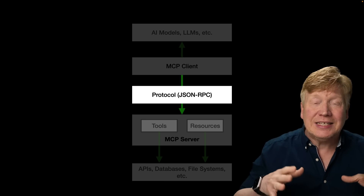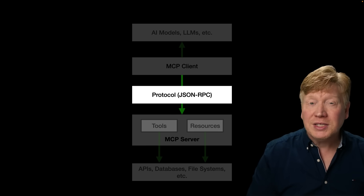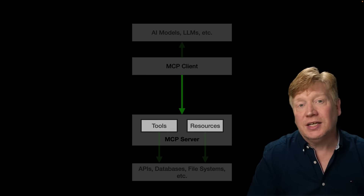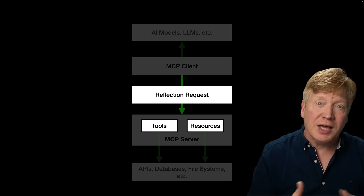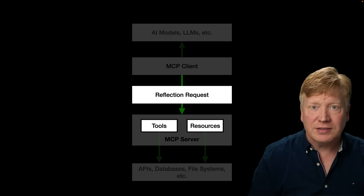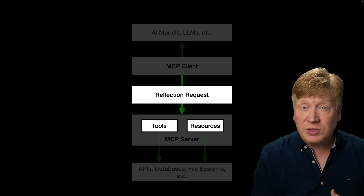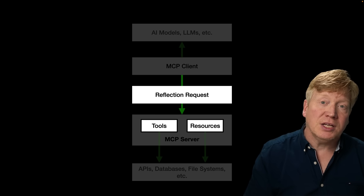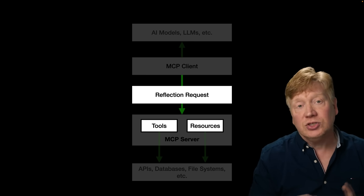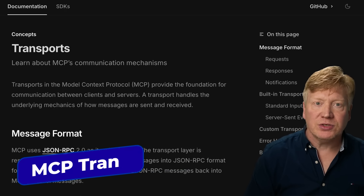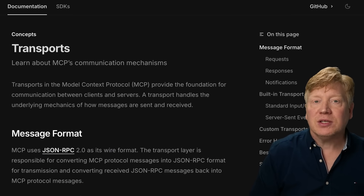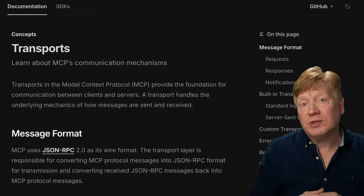The P in MCP means protocol. The MCP protocol defines the structure of the messages sent between the client and the server. You don't need to know all the details of the messages themselves, but what is important is that it is well-defined and supports something called reflection — the ability for the client to ask the server for information about the primitives it provides, like tools and resources. Reflection is a critical part of MCP and it's what makes MCP different from other API protocols like gRPC and REST.